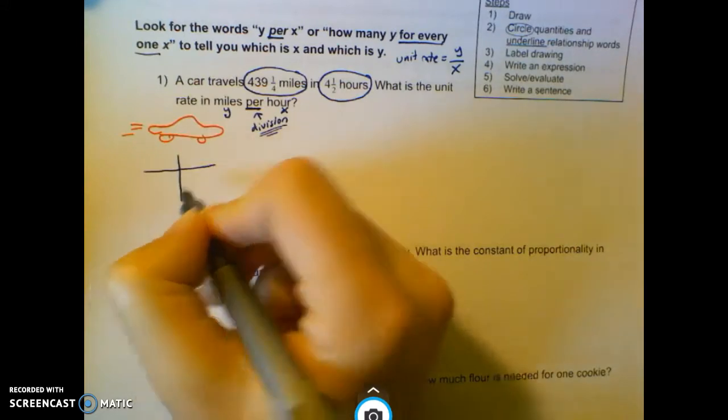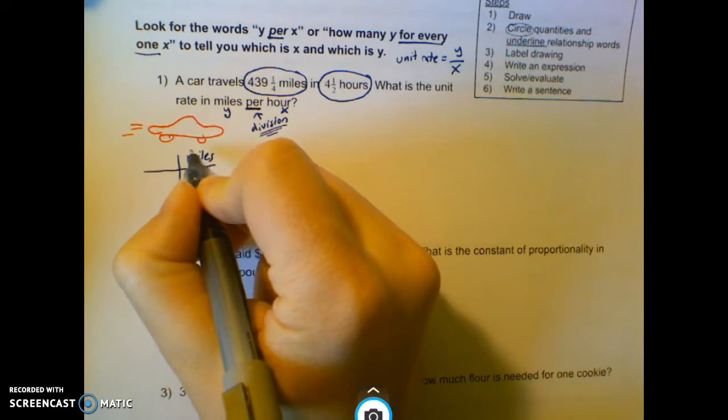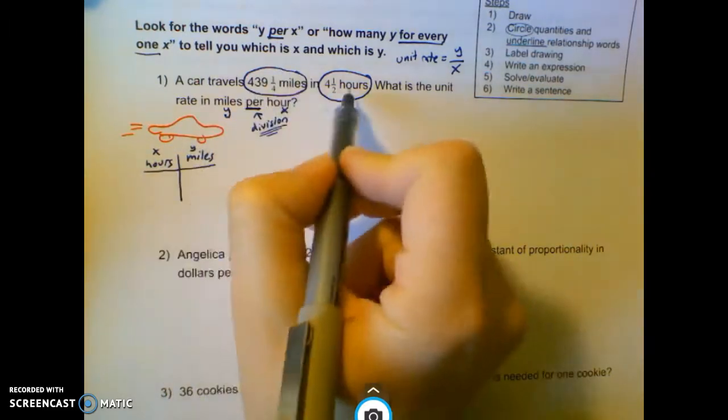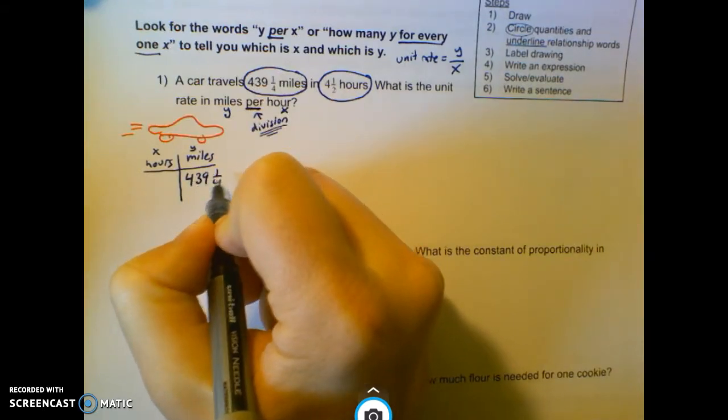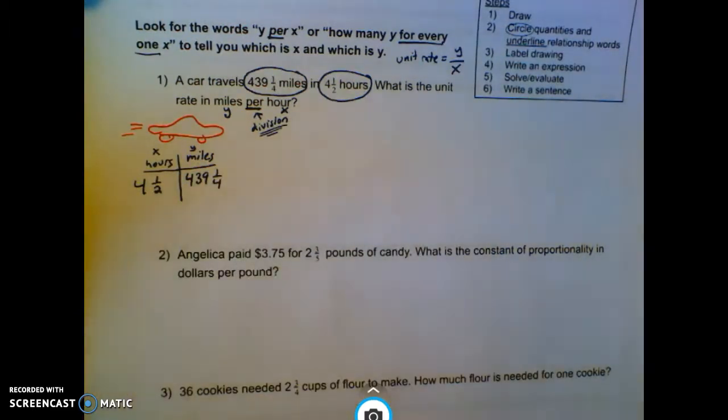So here, if you remember from the beginning of the year, I've got my table. My Y is miles. My X is hours. And I have these numbers right up here. So 439.25 miles and four and a half hours.